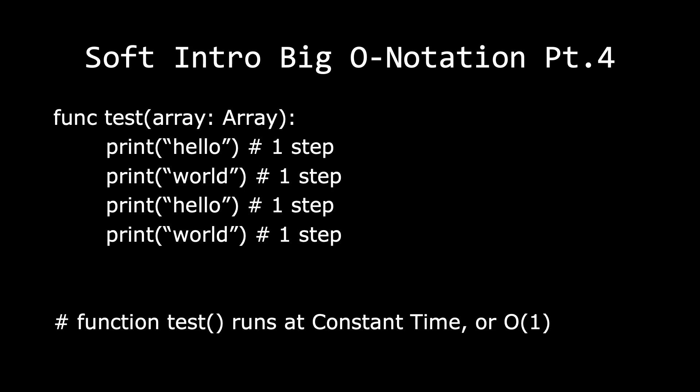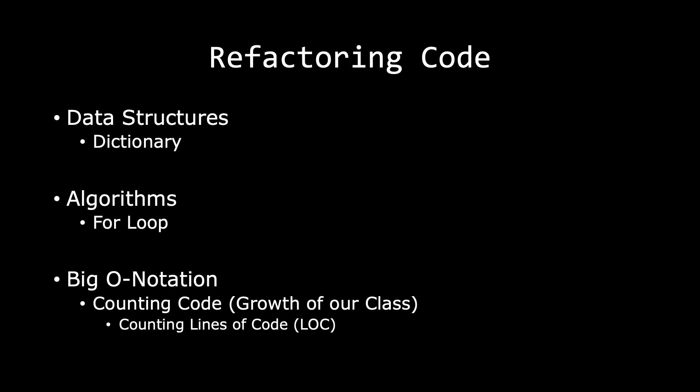We don't really need to know Big O notation in depth. Just focus on learning to count code, because we can use that to analyze our code in order to refactor it or find areas that need refactoring. Before going over a small coding example, let's take a look at how we can use data structures, algorithms, and Big O notation — more specifically a dictionary, for loop, and basic code counting — to improve our ability to refactor.